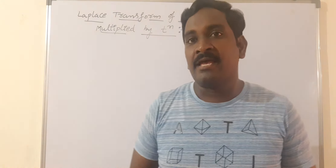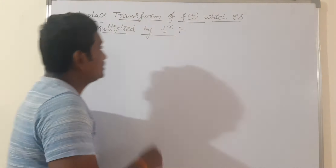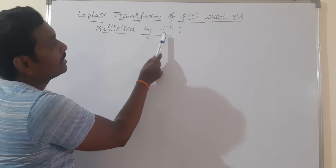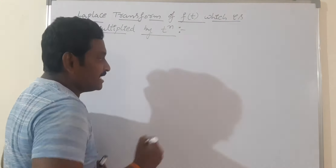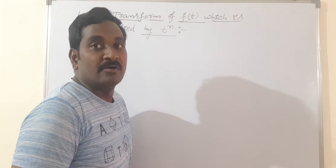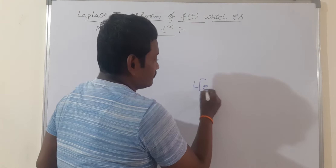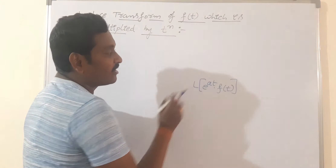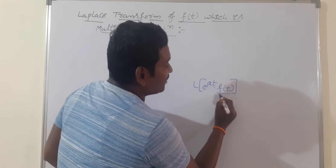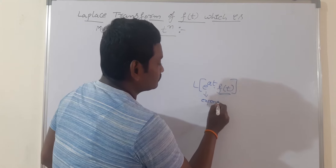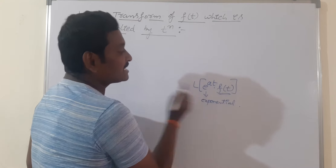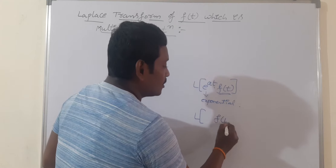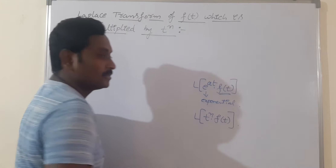Hi everyone. In this session I will cover another method in Laplace transformation, which is the Laplace transformation of f(t) multiplied by t to the power n. Previously we discussed the Laplace transformation of e^(at) · f(t), where the product of f(t) is an exponential term. Now in this method, we are going to discuss the Laplace transformation of a function multiplied by t^n.